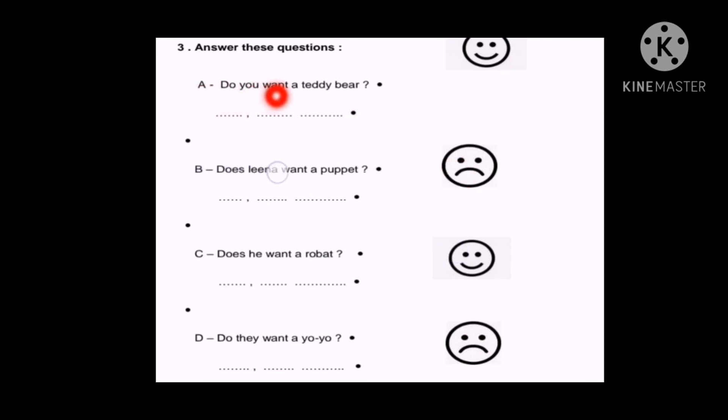A: Do you want a teddy bear? I have a happy face. Then my answer is yes, I do. Yes, I do. The question started with do. My answer ends with do. Perfect.